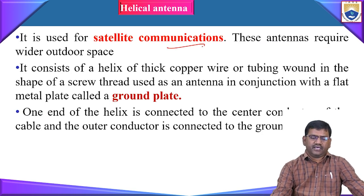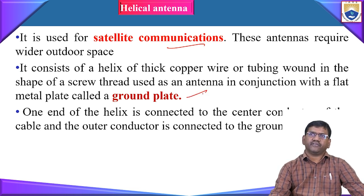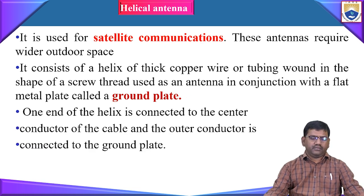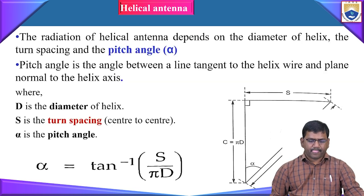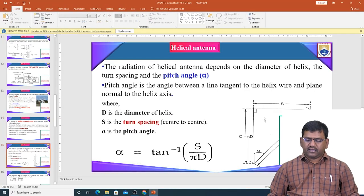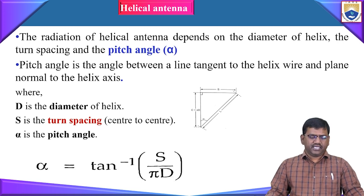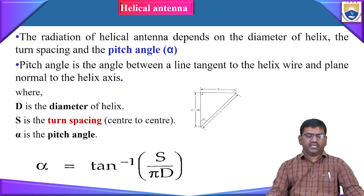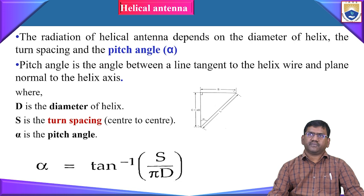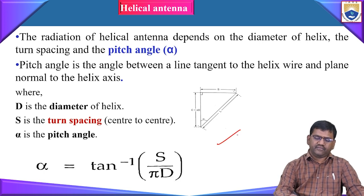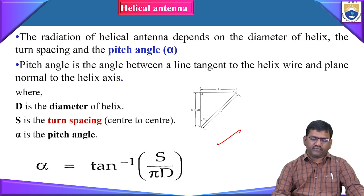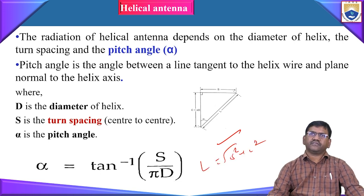The helical antenna is used for satellite communication. Its basic structure contains a helix of thick copper wire or tubing wound in a screw shape, used with a flat metal ground plate. One end of the helix connects to the center connector of the cable and the outer connector to the ground plate. Key design parameters include pitch angle alpha, diameter d, and turn spacing S. The design equations are: alpha = arctan(S / πd) and l = √(S² + C²).